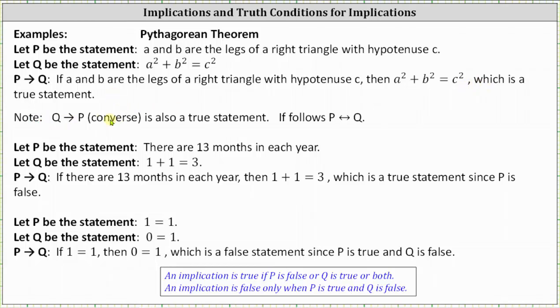Also notice the converse, if Q then P, which is: if A² + B² = C², then A and B are the legs of a right triangle with hypotenuse C, is also true. Therefore it follows P if and only if Q.